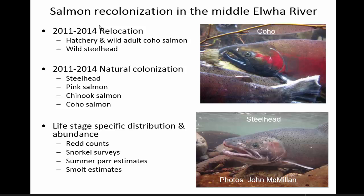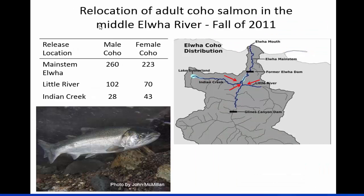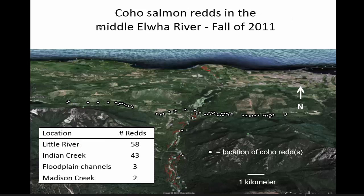In April 2012, the lower dam was out, so the middle Elwha between the two dams became available to fish. Species entering included steelhead — basically an ocean-going rainbow trout — coho salmon, Chinook salmon, and pink salmon. The lower Elwha Tribe, Washington Department of Fish and Wildlife, and National Park Service have all been involved. Fish were actually relocated prior to dam removal to give them a jump start — Coho returning to the lower river were released in three locations so that by the time the dam came out in spring, their offspring could go downstream.